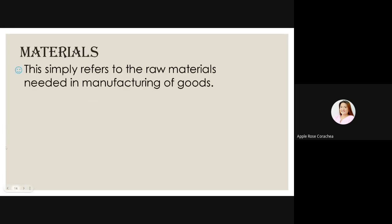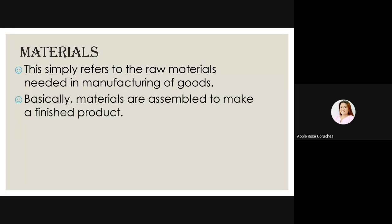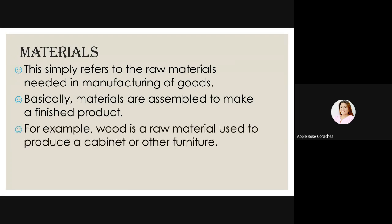Materials simply refers to the raw materials needed in manufacturing of goods. Basically, materials are assembled to make a finished product. For example, wood is a raw material used to produce a cabinet or other furniture. A cloth for clothing like pants, or cloth to produce bags. Leaves produce papers. So those are examples of raw materials.